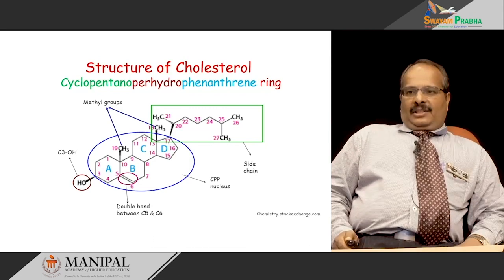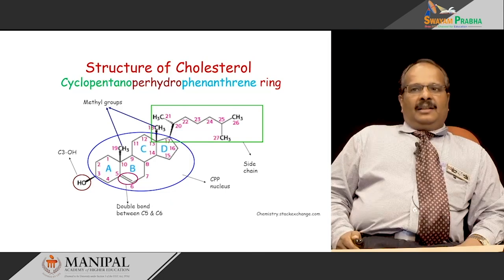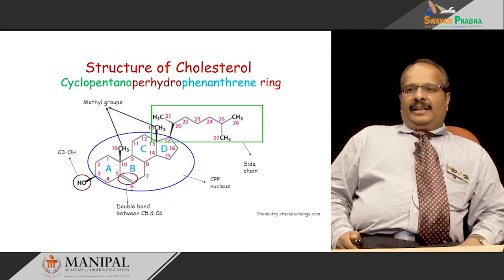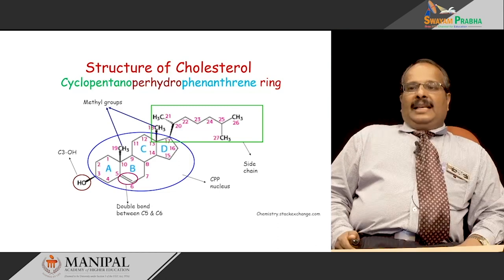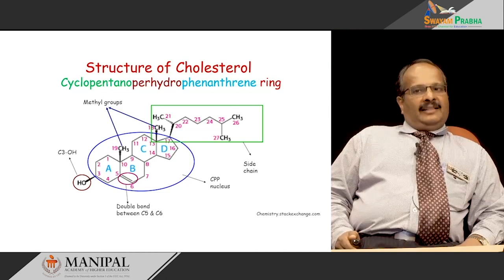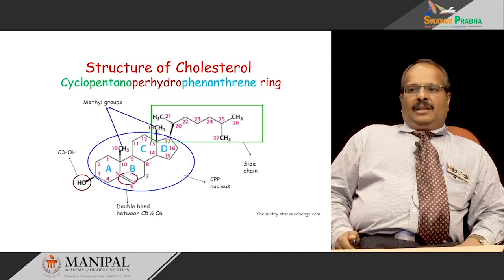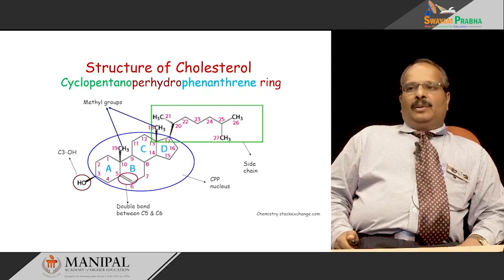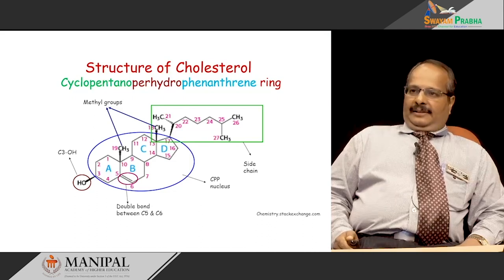In this ring structure, the D ring is a cyclopentane ring and A, B, C are the phenanthrene rings, and hence the name cyclopentano-perhydro-phenanthrene ring.